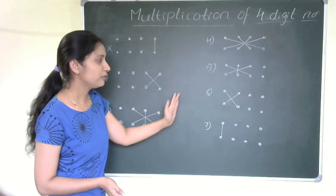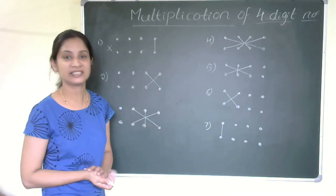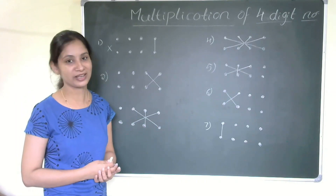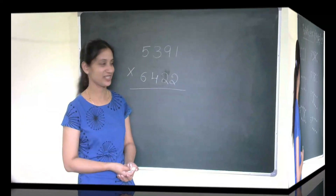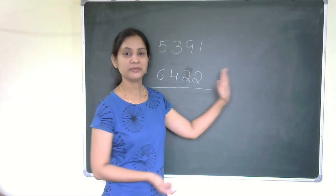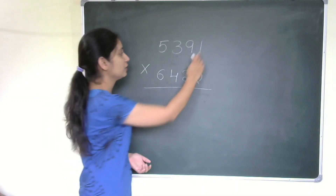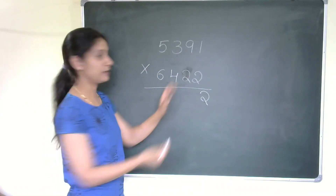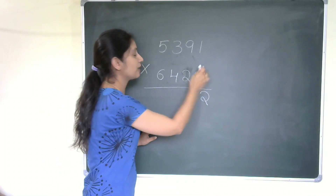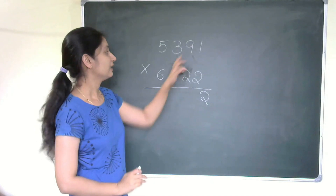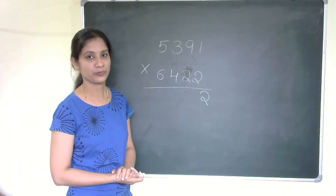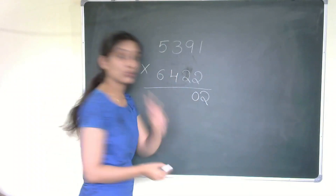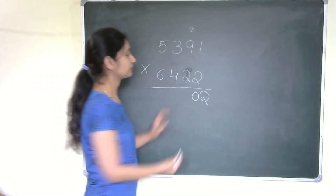Don't be confused — once you go through an example it becomes very easy and fast. Let us solve one example. Step one: start from the right-hand side, unit places only — two ones are two. Step two: nine twos are eighteen, plus two ones are two — that is eighteen plus two equals twenty. Write zero, carry over two.